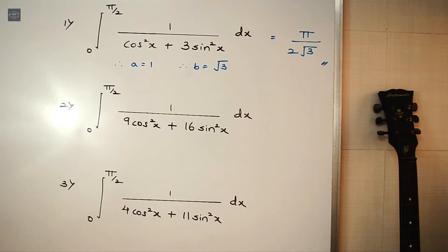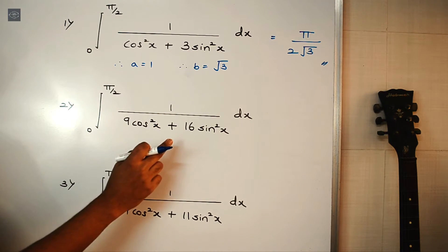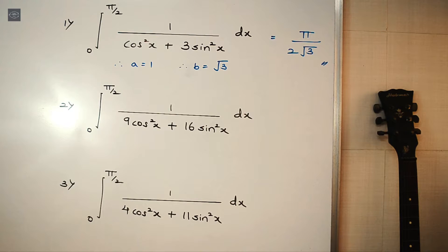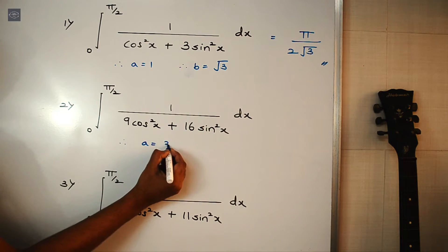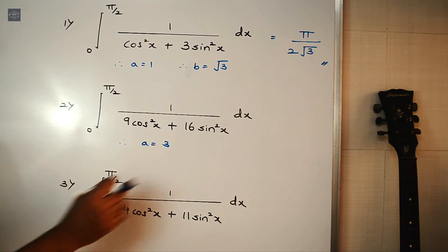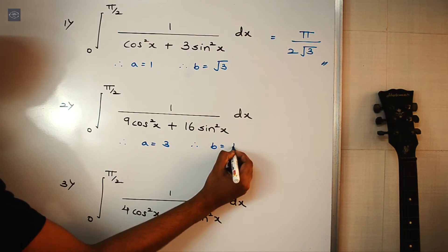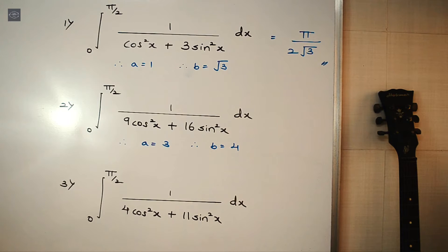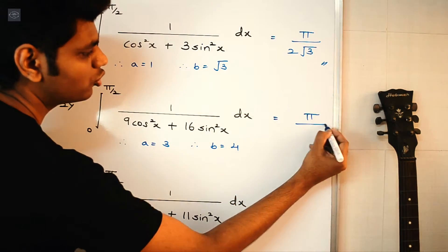Now on similar lines, for the next one we have integral 0 to π/2, 1 upon (9cos²x + 16sin²x). Here a² = 9, so a = 3. Similarly, b² = 16, so b = 4. Therefore, the value of this integral is π/(2ab).